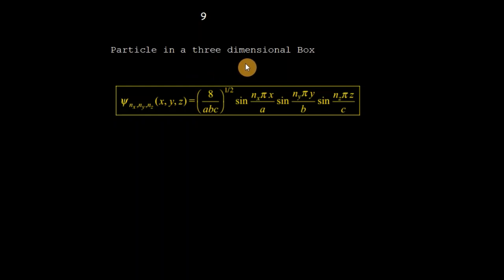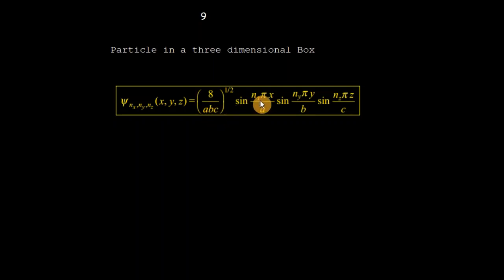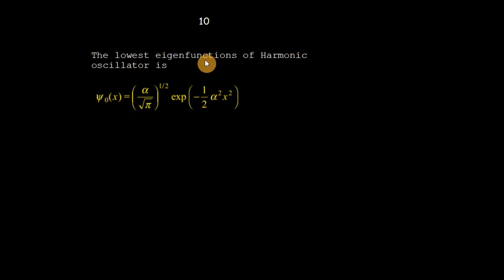Similarly, for a particle in a three-dimensional box of dimensions a, b, c, the wave function is: ψ(nₓ, nᵧ, n_z) = √(8/abc) · sin(nₓπx/a) · sin(nᵧπy/b) · sin(n_zπz/c). For a harmonic oscillator at the microscopic level performing harmonic motion, the wave function is obtained by solving the Schrödinger wave equation and takes a specific mathematical form.